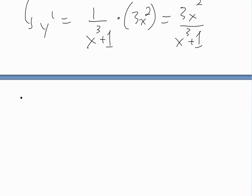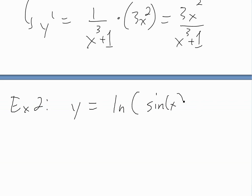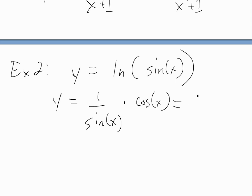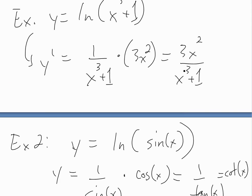Example 2: y = ln(sin x). Again using the chain rule — the derivative of ln of something is 1 over that something — so we get 1/sin(x). Multiplying by the derivative of sin(x), which is cos(x), gives cos(x)/sin(x), which equals cot(x). So y′ = cot(x).